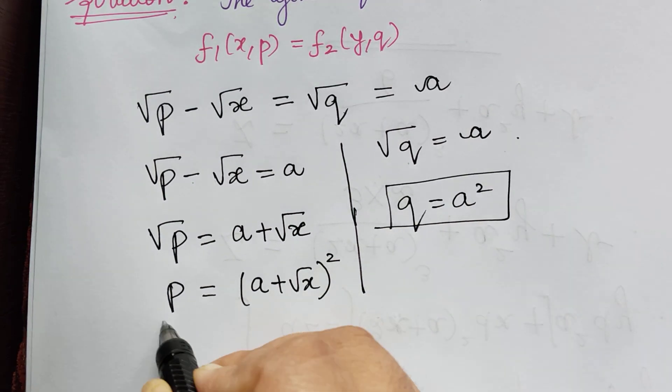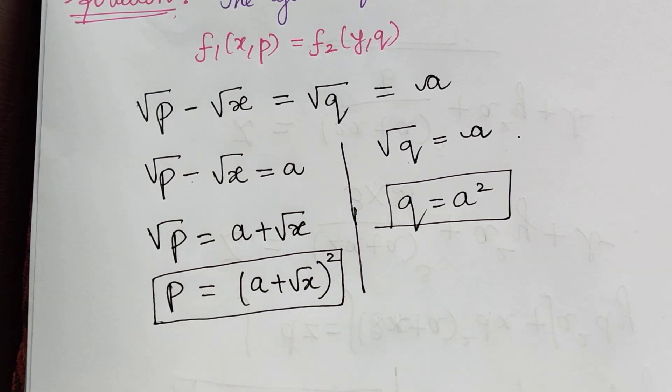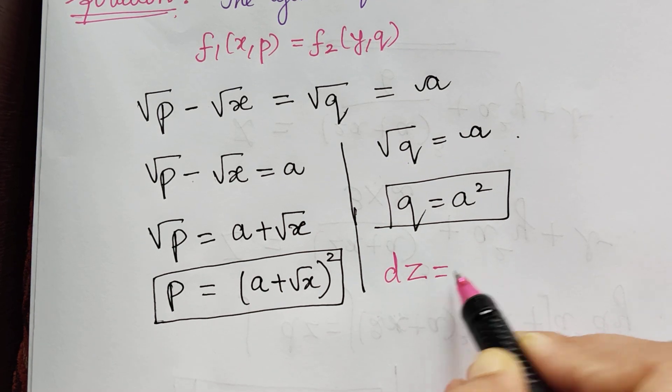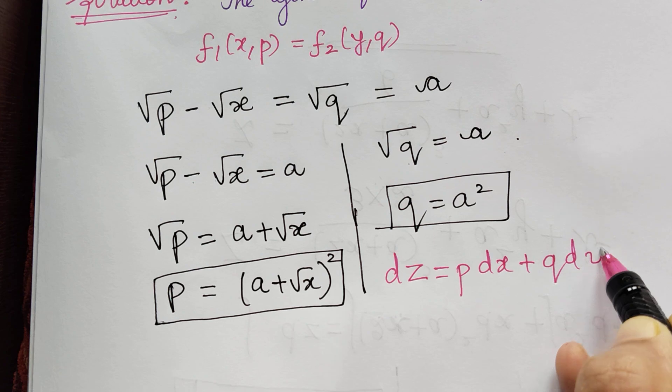So we have obtained the value of p and the value of q. Now we have to substitute these two values in the equation dz equals p dx plus q dy.